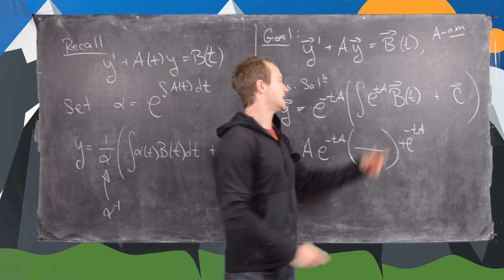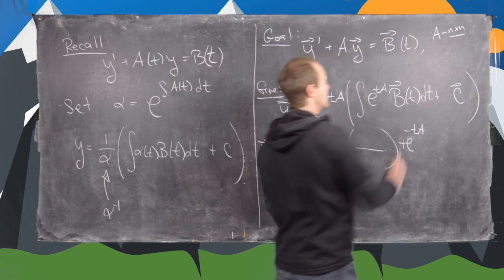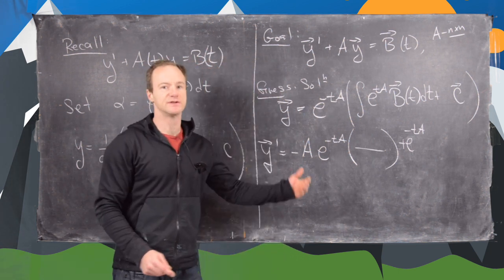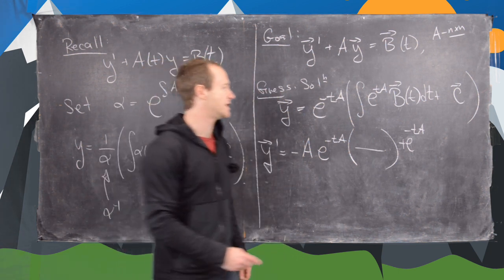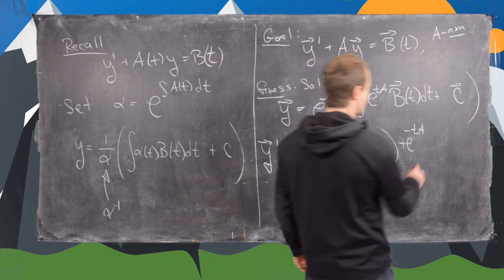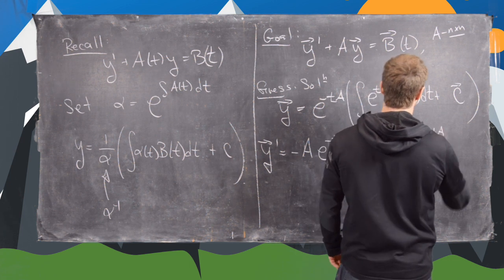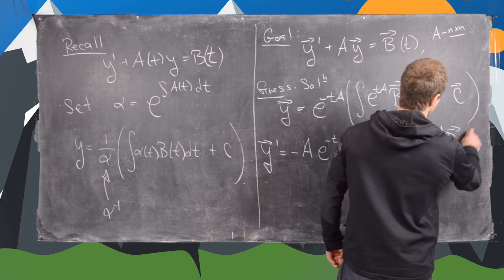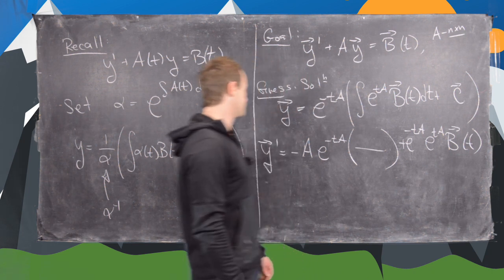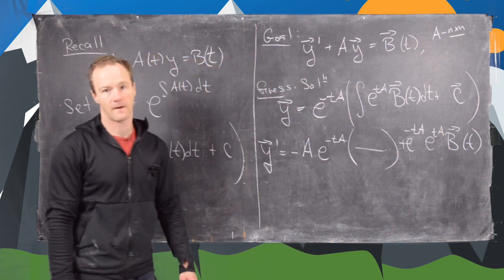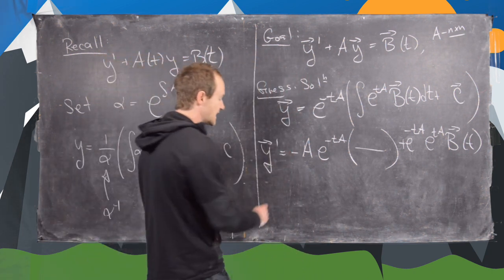This is an antiderivative, so we can use the Fundamental Theorem of Calculus Part 1 to say that it equals e to the tA times our vector function b.